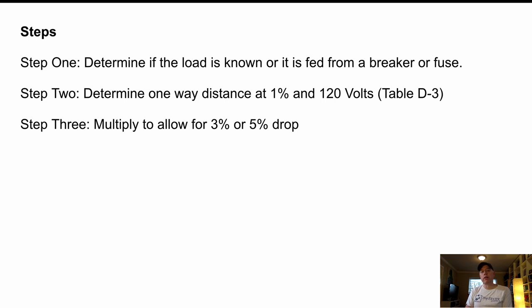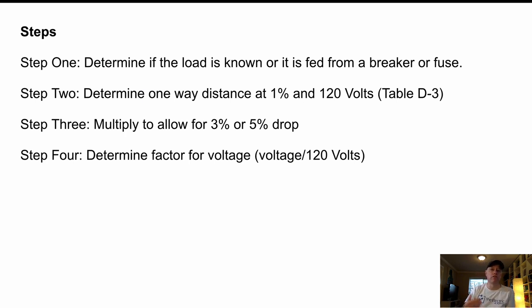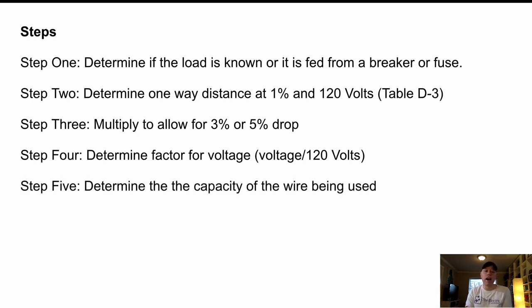Step three, we're going to multiply to allow for the 3% or 5% volt drop. Step four, we're going to determine the factor for voltage. Now again, we're going to take the voltage divided by 120. So if it's 120 volt load, well then it's 120 divided by 120 is 1. 240 would be going 240 divided by 120 is 2. If you say on and on, if you use 277, it'd be 277 divided by 120, which gives you 2.31 and so on and so on. Hopefully you're getting the point. Step five is we have to determine the capacity of the wire being used. And there's another table that helps us out with that.